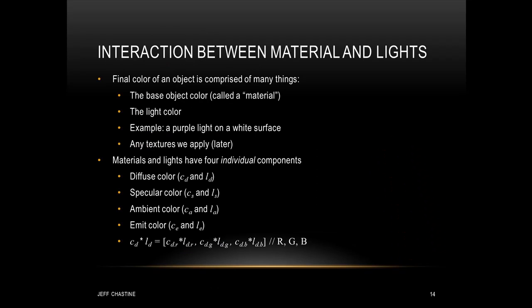Now the final color that we generate is going to be the interaction of several different things. The mesh that we're trying to render has a base color called a material, and a material has separate colors for its diffuse, specular, ambient, and emit components. The final color is also determined by the light color, which also has diffuse, specular, ambient, and emit properties. And as an example, imagine that we have a light source that's casting purple light on a white surface. You can imagine that the final color of that object is going to be purple. There are also things like textures that are going to dictate the final color, but we'll talk about those later.